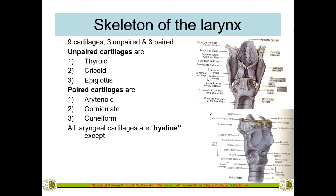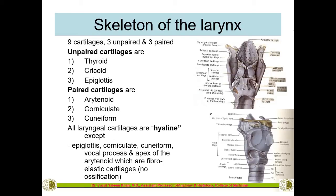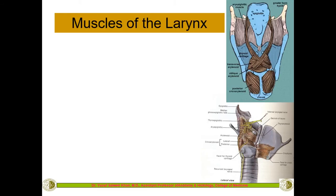All laryngeal cartilages are made up of hyaline cartilage, except the epiglottis, the corniculate, the cuneiform, and the apex of the arytenoid cartilage — these are made up of fibroelastic cartilage because they do not undergo ossification. The epiglottis must remain non-ossified so it can move. Hyaline cartilages can later become bone-like.